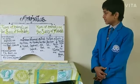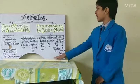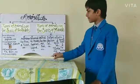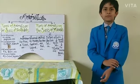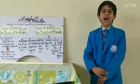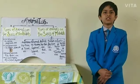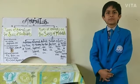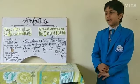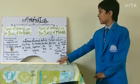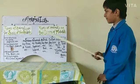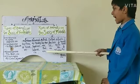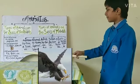Third, aerial animals. Animals that fly in the air are called aerial animals. For example, bats, etc.